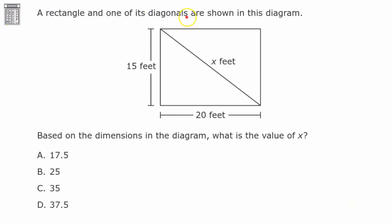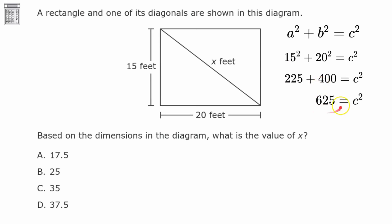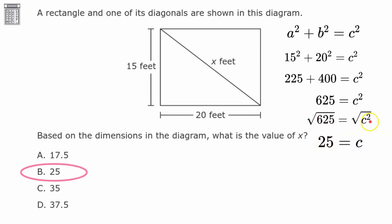We have a rectangle and one of its diagonals is shown. Based on the dimensions in the diagram, what is the value of X? Because this is a rectangle, we have a right angle and a right triangle inside it, so we can use the Pythagorean theorem. X is the hypotenuse; the legs are 15 and 20. So 15² + 20² = C²: 225 + 400 = 625. The square root of 625 is 25, so the value of X is 25.